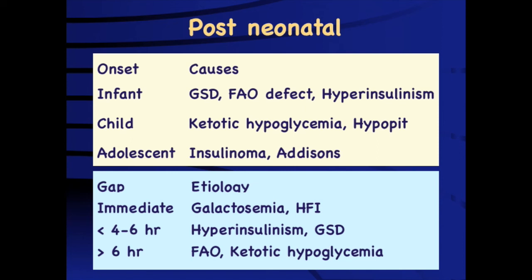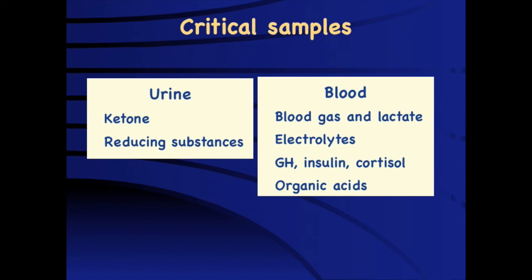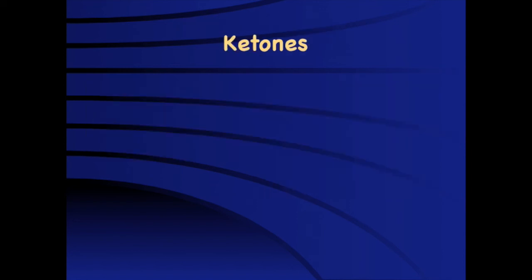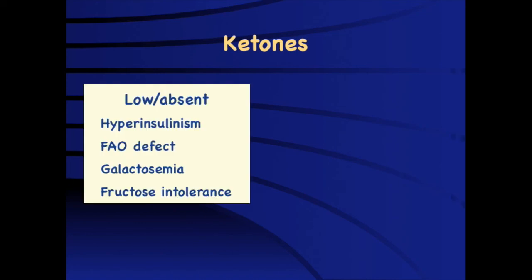Whenever a child comes with hypoglycemia, it is very important to first confirm hypoglycemia and collect relevant samples for diagnosis. We need to keep samples — especially urine and blood — for ketones and reducing substances, blood gas, lactate, electrolytes, endocrine parameters, and organic acids. Out of these, the most important are ketones and reducing substances, which will guide evaluation. Every child who is hypoglycemic should produce ketones. If a child is not producing ketones during hypoglycemia, there is either a problem of too much insulin suppressing ketogenesis, a problem in fatty acid oxidation, or rarely galactosemia or fructose intolerance.